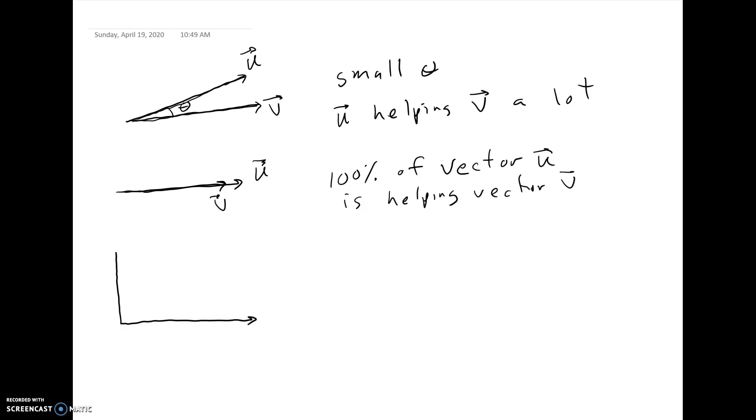If you have vector u is perpendicular to vector v, in other words, the angle is 90 degrees, then it's not helping at all. Imagine you have a wagon, you want the wagon to be pulled towards the right, and you're trying to pull the wagon by pulling straight up. The wagon's not going to go anywhere. It means vector u is not helping at all.